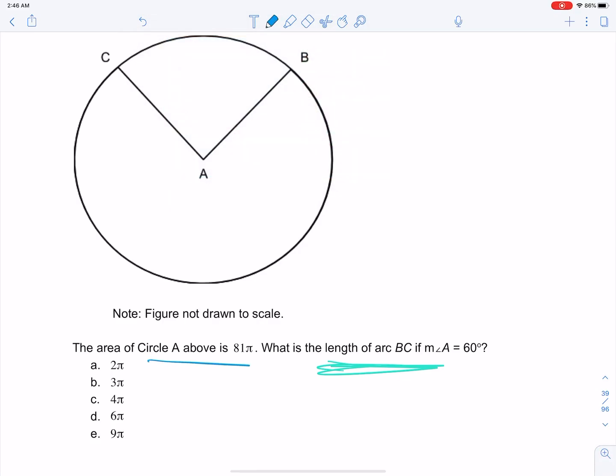So here we have this area of circle A above is 81 pi, so the area is 81 pi, and we know pi r squared equals 81 pi. Get rid of the pi's, square root both sides, r is 9, so we know our radius is 9.